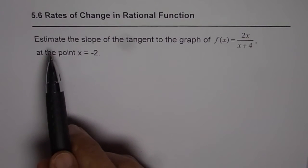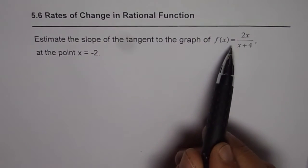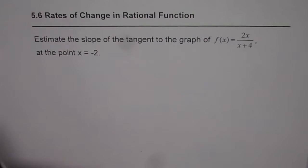The question here is: estimate the slope of the tangent to the graph of f(x) = 2x/(x+4) at the point x = -2.